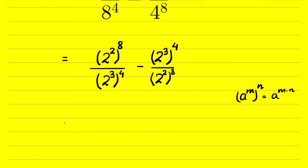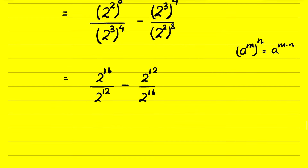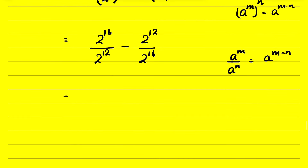So 2 raised to the power 2, whole raised to the power 8, is 2 raised to the power 16, upon 2 raised to the power 12, minus 2 raised to the power 12 upon 2 raised to the power 16. There is another identity: a raised to the power m upon a raised to the power n equals a raised to the power m minus n. Let's use this identity.